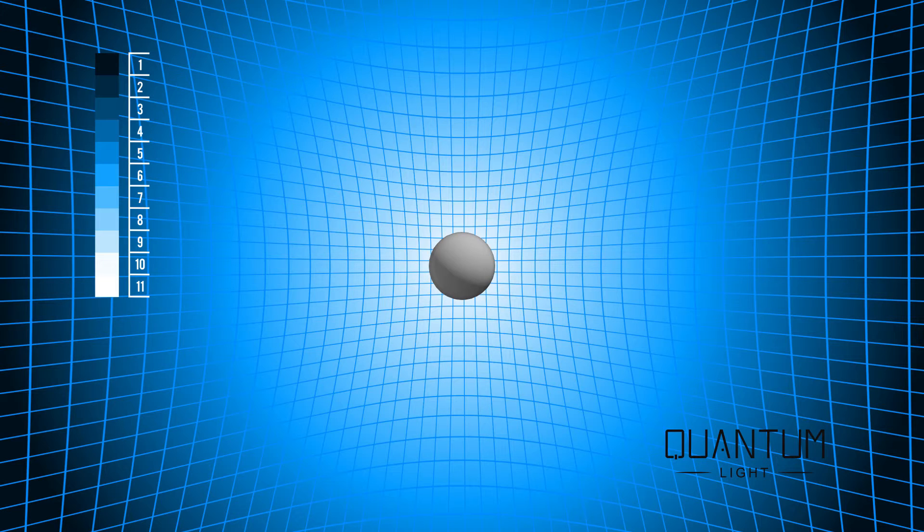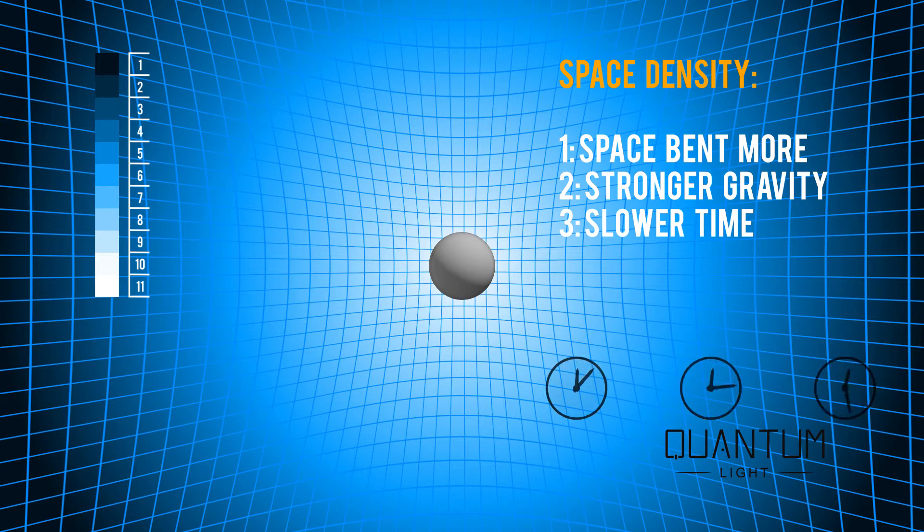One, the closer to the mass, the more space is bent. Two, the closer to the mass, the stronger the gravitational pull. And three, the closer to the mass, the slower time progresses.